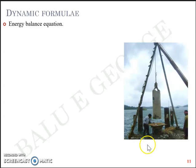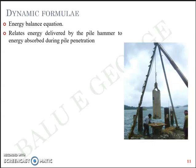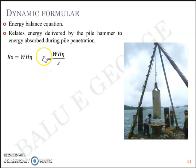In short, the dynamic formula relates the energy delivered by the pile hammer to the energy absorbed during pile penetration, represented in rudimentary form as R = Wh·η, or R = Wh·η / s, where R is the pile resistance assumed to be directly related to the ultimate static pile capacity Q_u. In short, R in this equation represents Q_u.